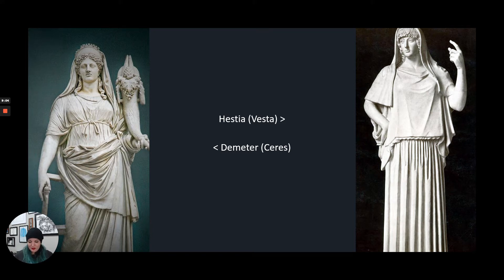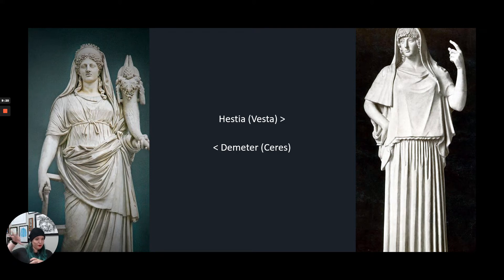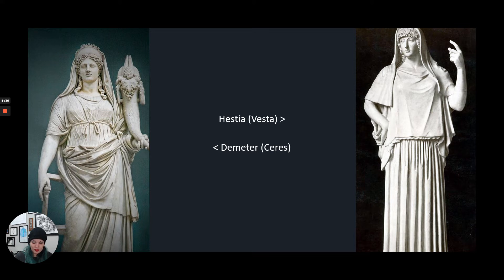Demeter is the sister of all these people we've already mentioned, and she's the goddess of grain and agriculture. Sometimes she is holding a cornucopia — that conical basket thing with fruit and vegetables coming out of it — and sometimes she just has a big bushel of wheat. She's very important to harvest time, and she is also the mother of Persephone, who is someone we're going to learn about in a minute.